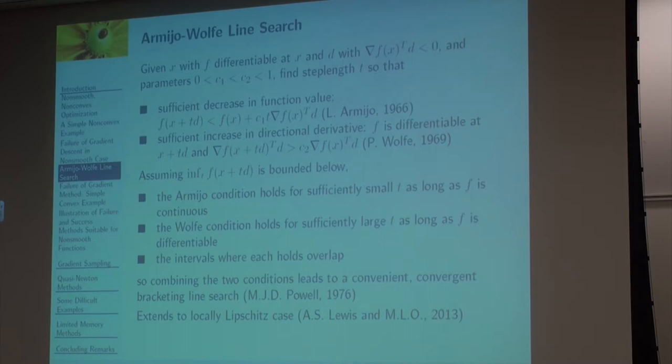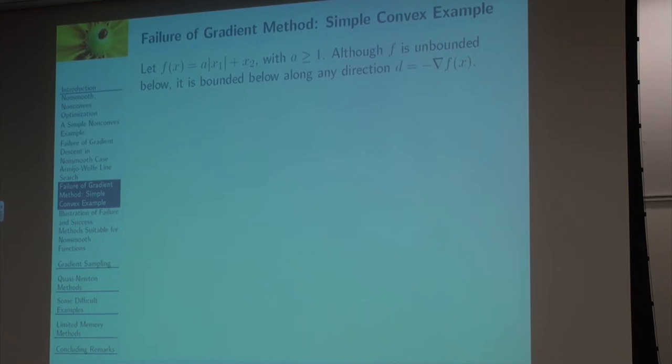Now, assuming that the function is bounded below along the line, then the Armijo condition holds for sufficiently small t. Also the Wolfe condition holds for sufficiently large t. Combining the two conditions leads to a very convenient bracketing line search. This is what in Nocedal and Wright you would call a weak Wolfe line search, although it's not a very good name.